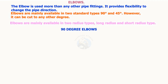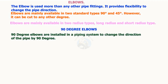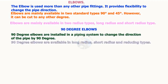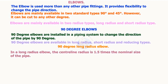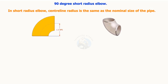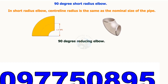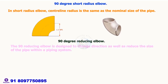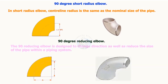90-degree elbows are installed in a piping system to change the direction of the pipe by 90 degrees. 90-degree elbows are available in long radius, short radius, and reducing types. In a long radius elbow, the centerline radius is 1.5 times the nominal size of the pipe. The 90-degree reducing elbow is designed to change direction as well as reduce the size of the pipe within a piping system.